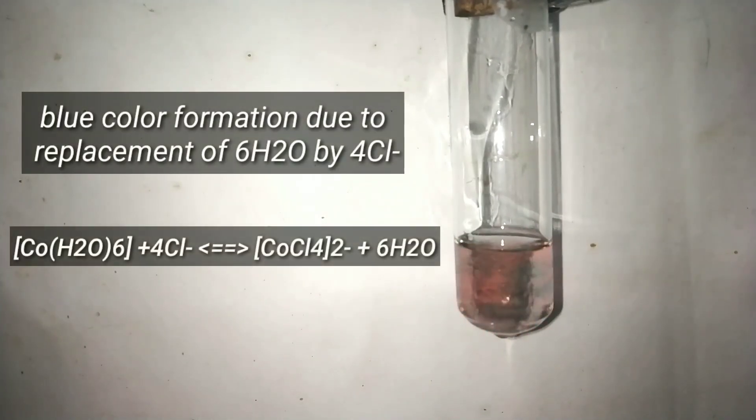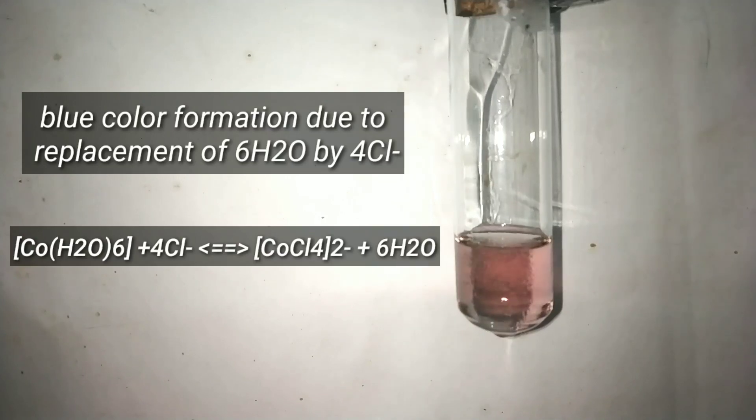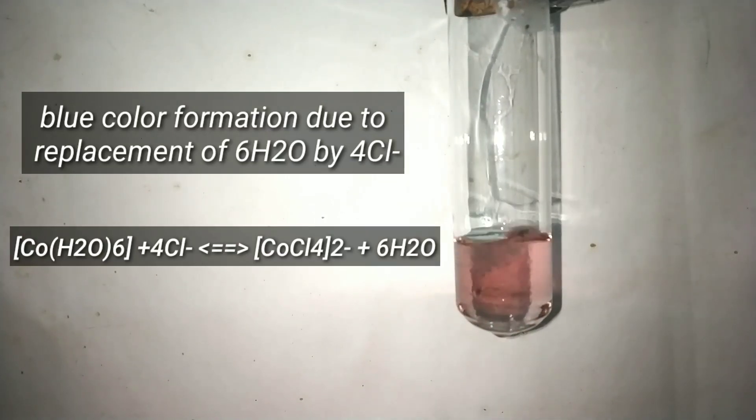Now on adding concentrated hydrochloric acid into the cobalt 2 chloride solution a blue color is formed due to replacement of six water molecules by four chloride ions. And actually this is a reversible reaction that is why you see that the solution again turns pink.